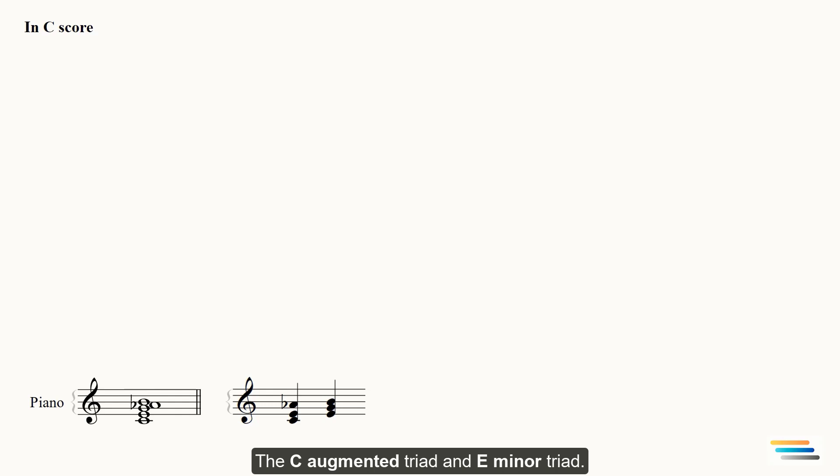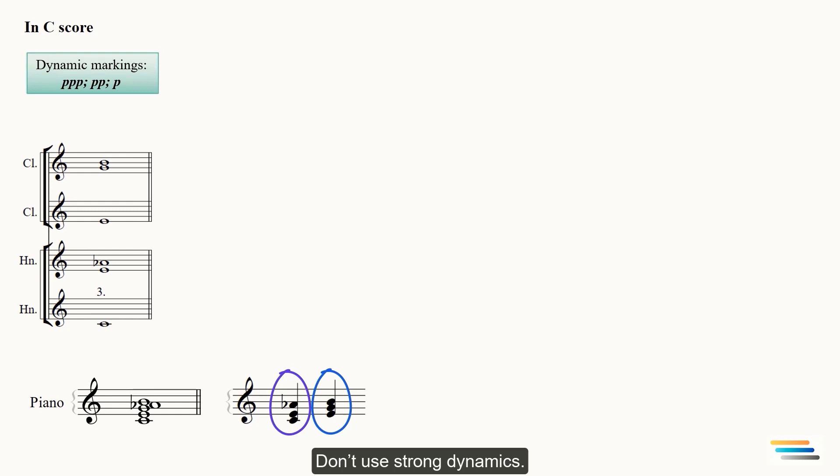I want to highlight the C augmented triad. Hence, it will be played by three horns. The E minor can be voiced by three clarinets. Don't use strong dynamics.